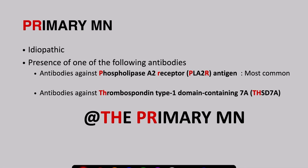The primary membranous nephropathy is usually idiopathic. In this condition, there will be the presence of one of the following antibodies: antibodies against the phospholipase A2 receptor antigen, which is the most common type, and antibodies against thrombospondin type 1 domain containing 7A. The mnemonic to remember these antibodies is: in 'primary membranous nephropathy,' TH from the word 'thrombospondin' and ER from 'primary' stands for phospholipase receptor.